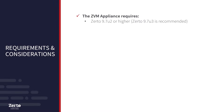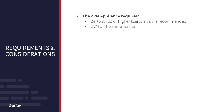The ZDM appliance requires Zerto 9.7 U2 or higher, but Zerto 9.7 U3 or higher is recommended. The ZDMA and ZDM must be of the same version, so those using Zerto 9.7 U3 ZDMs will want to migrate to a Zerto 9.7 U3 ZDMA.